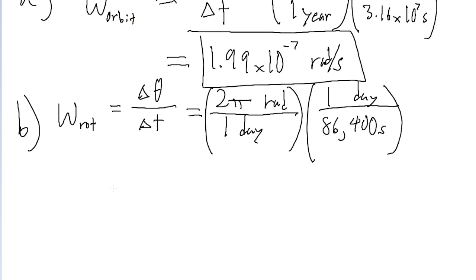And if you put this into a calculator, we get an angular velocity of 7.27 × 10^-5 radians per second.